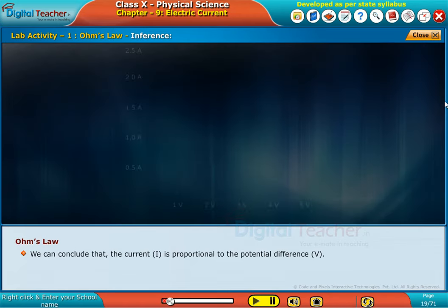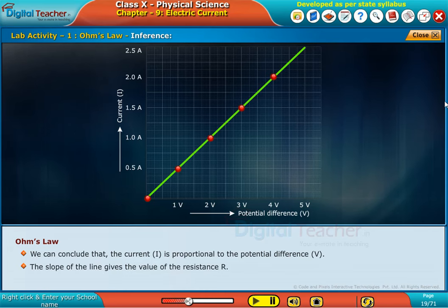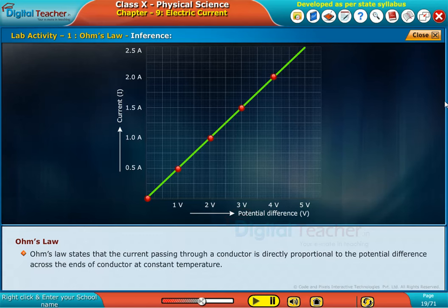We can conclude that the current I is proportional to the potential difference V. The slope of the line gives the value of the resistance R. Ohm's law states that the current passing through a conductor is directly proportional to the potential difference across the ends of conductor at constant temperature.